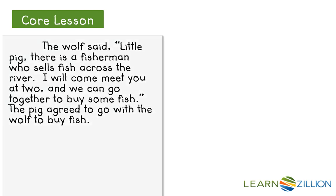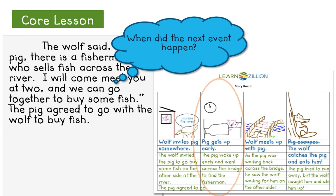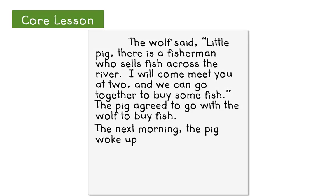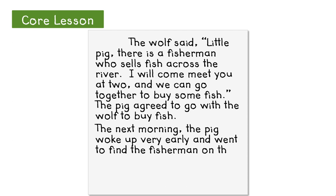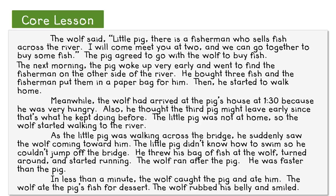Now I need to ask myself, when did the next event happen? Well, the next event is the pig waking up early. That happened the next morning. I'm going to write: 'The next morning, the pig woke up very early and went to find the fisherman on the other side of the river.' 'The next morning' is an example of a temporal word or phrase. It tells the person reading my story when something is happening. To finish my first draft, I write the rest of the key events from my storyboard in order. As I write, I will make sure I'm connecting the key events with temporal words and phrases.